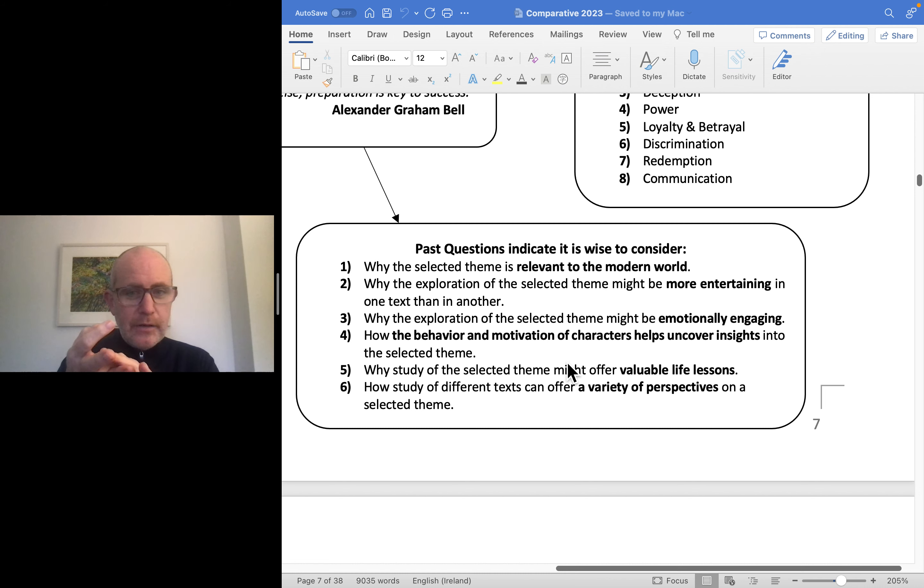How does the behavior and motivation of characters help you uncover insights? If you're studying Tribes, Nina Raine's play - there's a moment when Billy decides he's not going to speak with his family anymore other than through sign language. Why is that? Why does he do that? If you're looking at communication in that text, or power, or relationships. If you're doing A Doll's House, which I know a lot of people are doing, why does Nora walk out on Torvald at the end of the play?